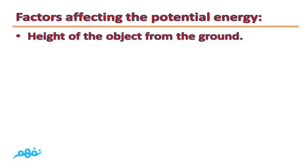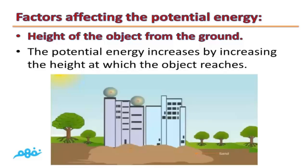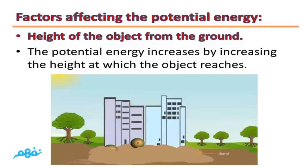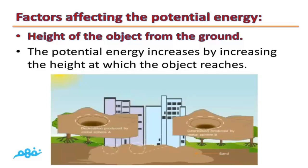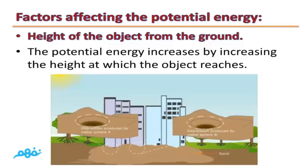The second factor that affects the potential energy is the height of the object from the ground. The potential energy increases by increasing the height at which the object reaches. For example, if we have two identical spheres A and B, and they are left to fall from different heights, the higher ball will produce a larger depression than ball B. So by increasing the height, the potential energy of the object increases.